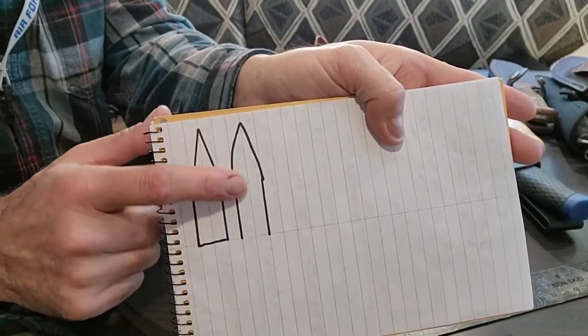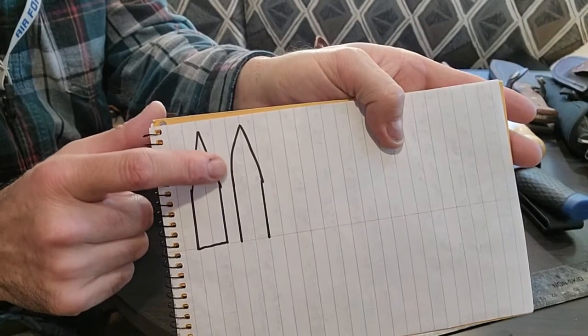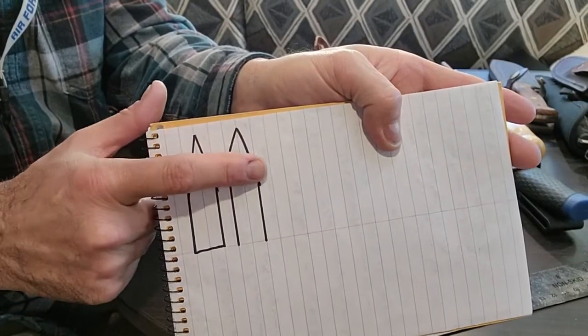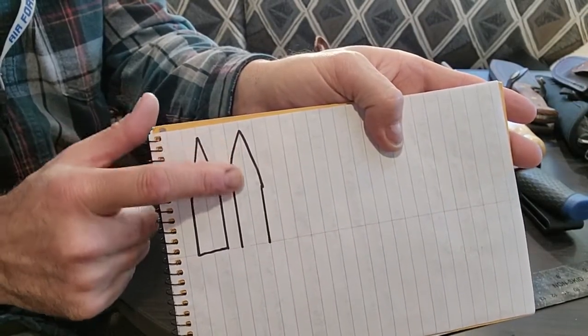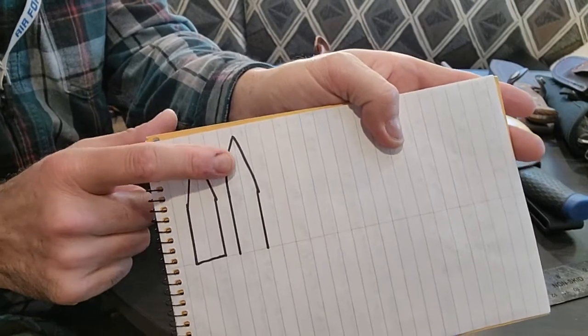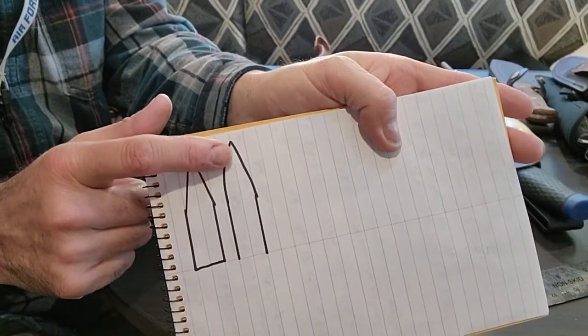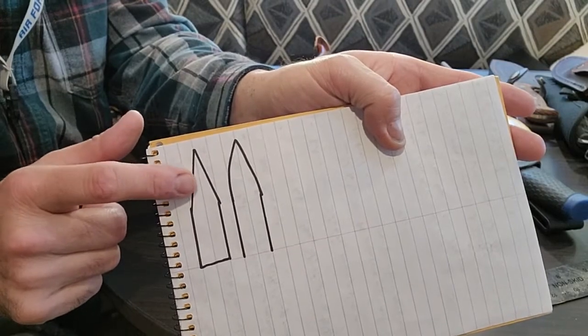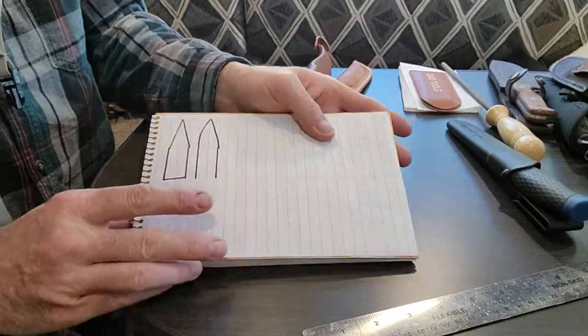The Scandi grind is like a big V edge, and the convex is similar but except the edges being straight they're curved convex. The convex grind can add a little more strength to the tip than a Scandi grind does, to make it simple.